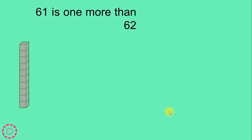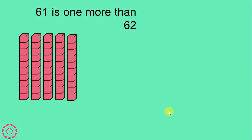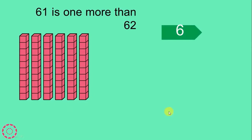61 is 1 more than 60. Counting by 10s: 10, 20, 30, 40, 50, 60. We have 61. 61 is made of 6 tens and 1 one — 60 and 1. We have 61.